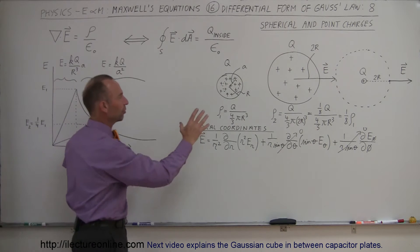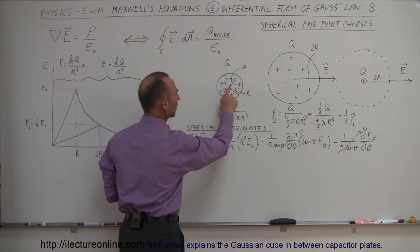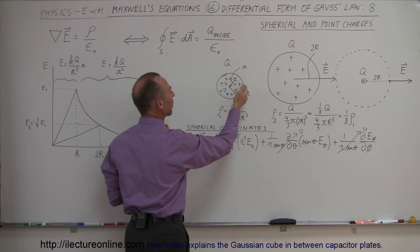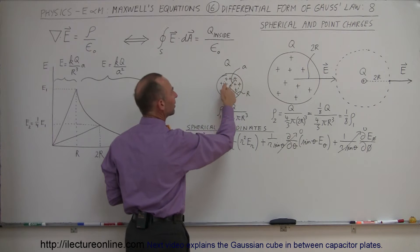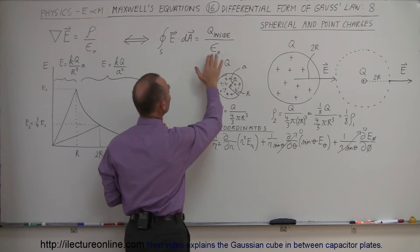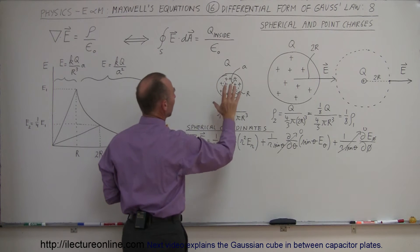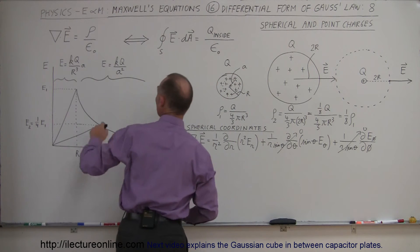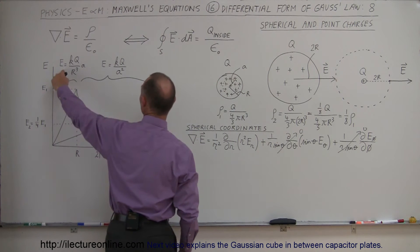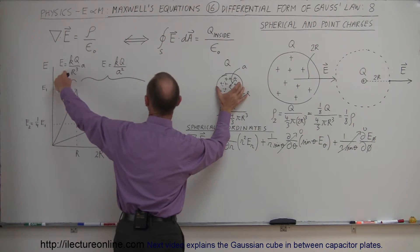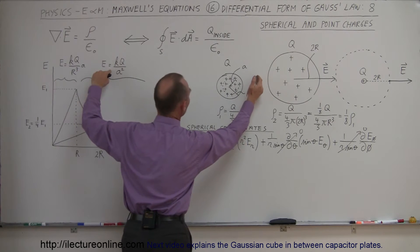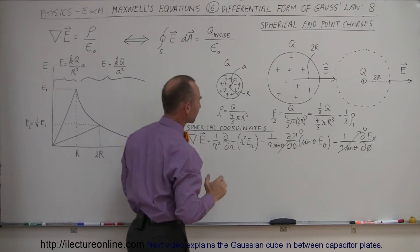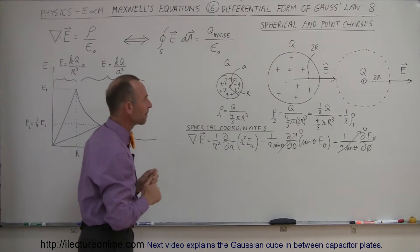Let's say we have a small sphere with radius r, and we want to find the electric field somewhere inside the surface. We can use the equation right here, and we find the electric field strength inside the sphere. Then if we go outside the sphere, this will be the electric field outside the sphere.